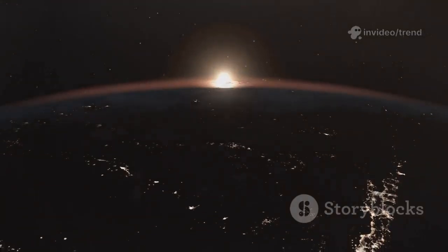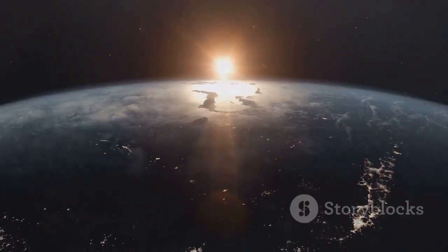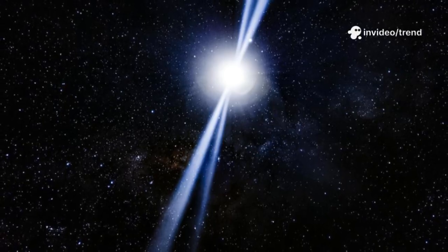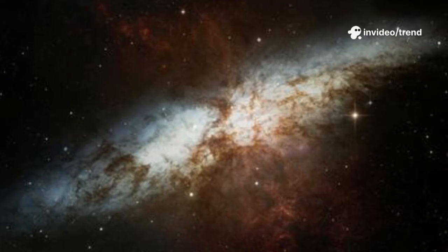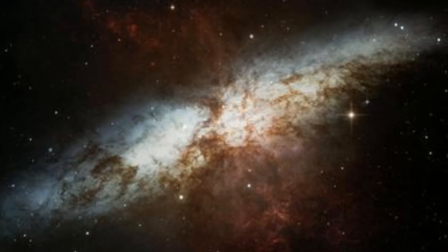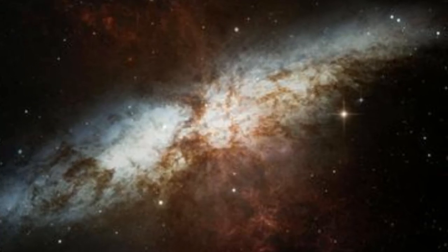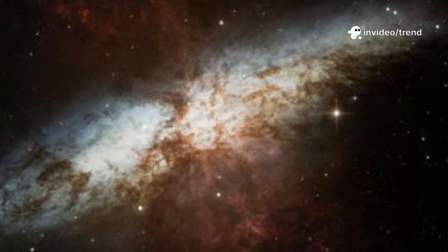The farther away something is, the older the light we see from it. For example, the Sun's light takes about eight minutes to reach Earth. When you see a sunrise, you're seeing the Sun as it was eight minutes ago. The light from Alpha Centauri, our closest star system, takes over four years to arrive. So we're always peering into the past. Webb takes this to the extreme, capturing light that's traveled for more than 13 and a half billion years.